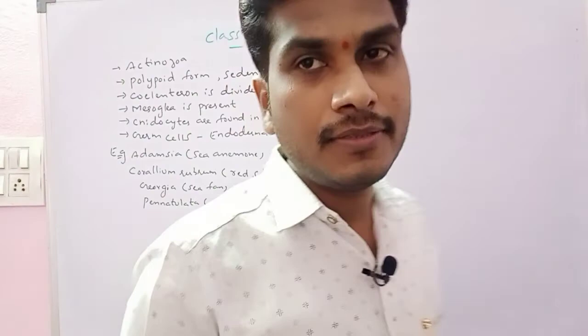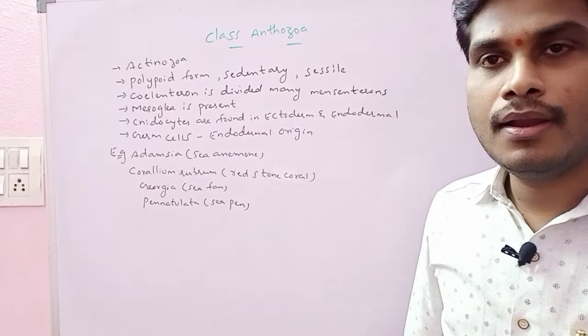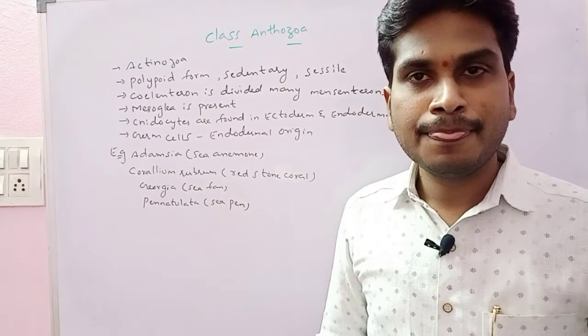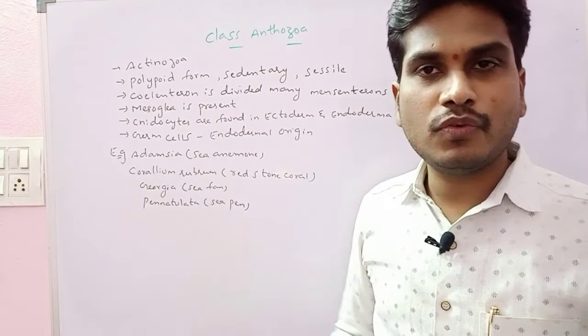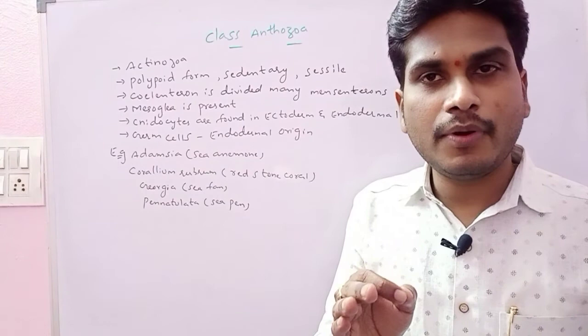This is about the characteristics. These are the characteristics of the actinozoans or anthozoans here. Actinozoans or anthozoans belongs to the phylum Cnidaria. That means cnidarian characters they are consisting of. As we know, Cnidaria is divided into three classes mainly: Hydrozoa, Scyphozoa, Anthozoa. This is Anthozoa. Anthozoa is also known as Actinozoa here. And remember a very important point here: anthozoans are always consisting of only polypoid form, not the medusa form here.